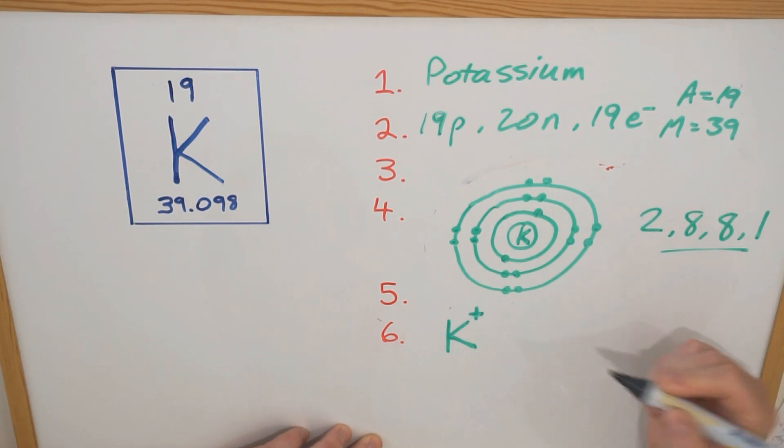We say that this is a cation. Positive ions are cations, negative ones are anions. But in this case, we've got a positive one, it's a cation. That's the type of ion that potassium becomes.